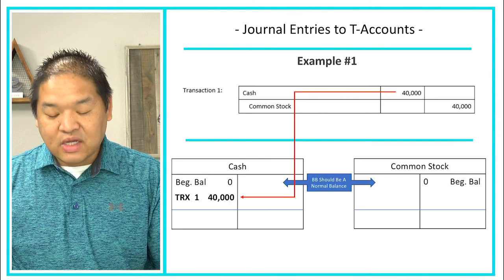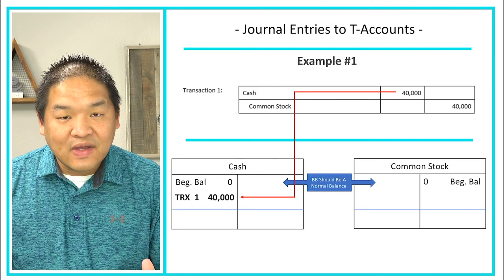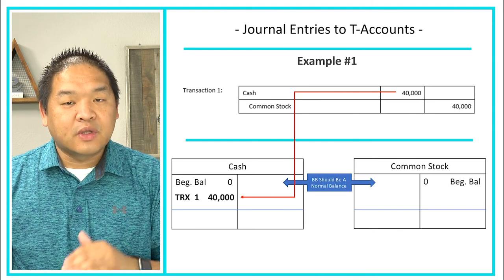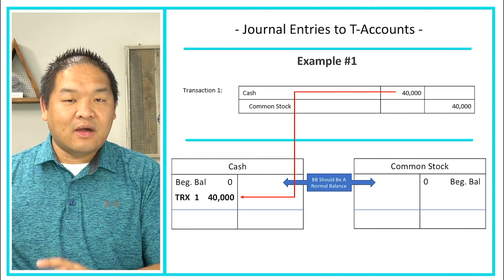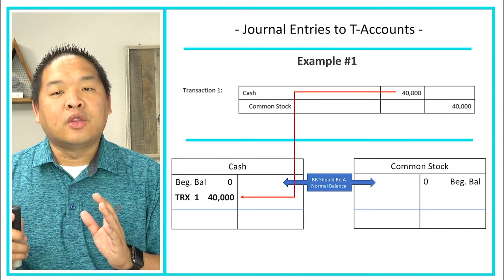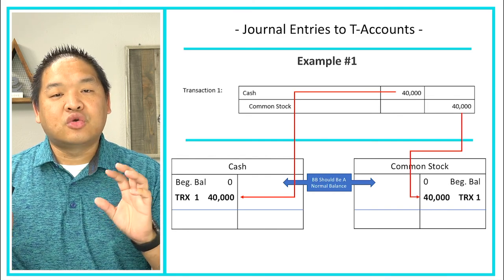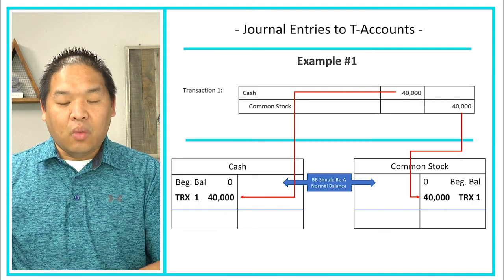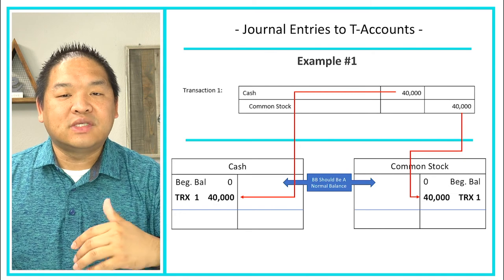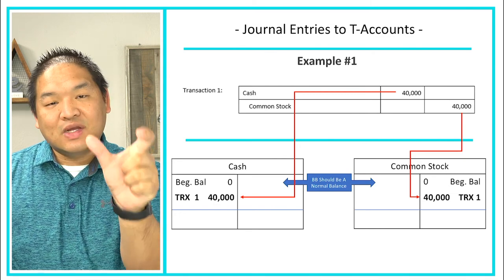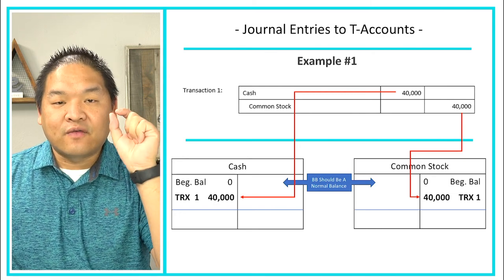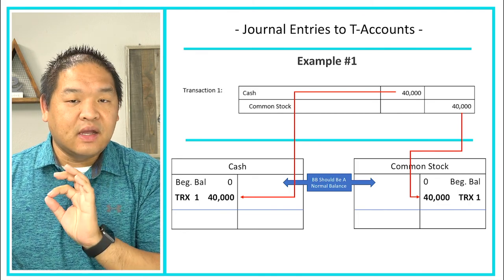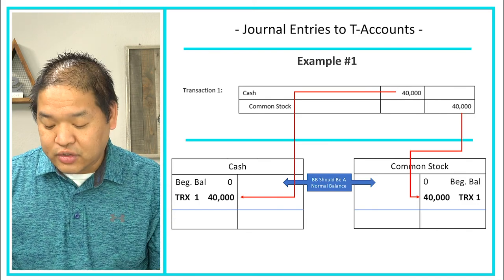Now that cash is done, we go to the next line: common stock. Common stock was credited — credit means the right side — so we go to the common stock T-account and on the right side we credit $40,000, referencing it to transaction one. When we post, all we're doing is taking each transaction from the journal entry to the individual account ledger or T-account.